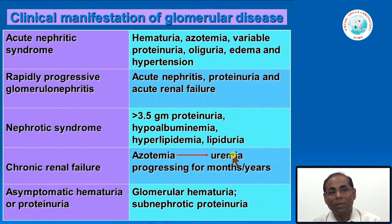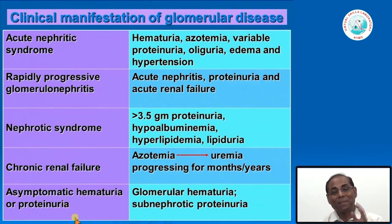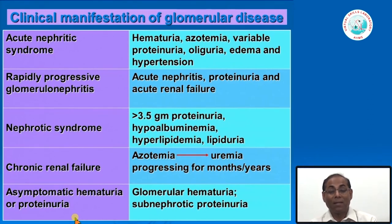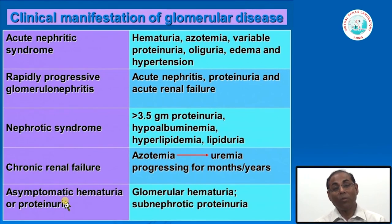All the glomerular diseases that have been classified present clinically in one of only five clinical syndromes. Even with thousands of permutations and combinations of structural and immunological issues, there are only five clinical presentations: acute nephritic syndrome, rapidly progressive glomerulonephritis, nephrotic syndrome, chronic renal failure, and asymptomatic hematuria or proteinuria. It is very important for the clinician to understand exactly what structural and immunological abnormality is occurring, otherwise it is very difficult to diagnose these cases.